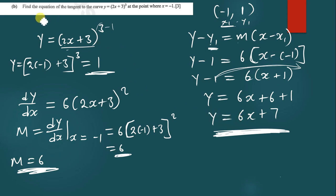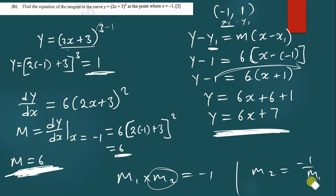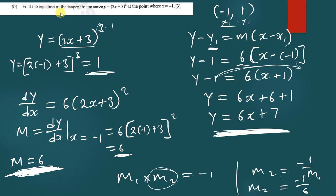If they ask for the equation of the normal to the curve, you simply change the gradient. Since m1 times m2 equals negative 1, you find m2 as negative 1 over m1. So the gradient of the normal is negative 1 over 6. You substitute that gradient into the same steps. Everything else remains the same; only the gradient changes.